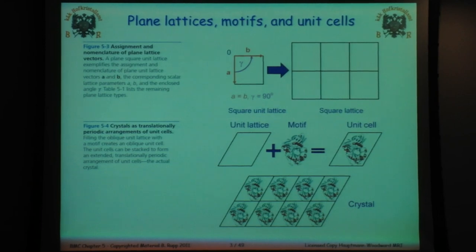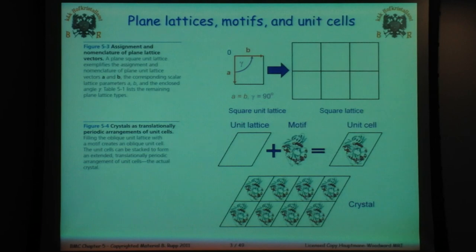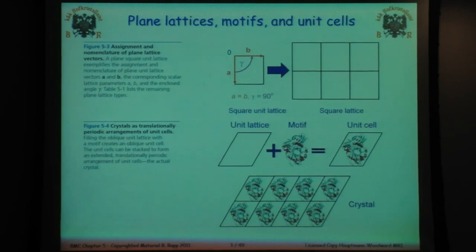The crystal is defined by cell edges. In a two-dimensional case we can talk about A and B, with an angle that is gamma. In the three-dimensional case, we have cell dimensions A, B, and C. Alpha is the angle between B and C, beta is the angle between A and C, and gamma is the angle between A and B.